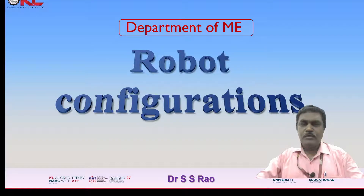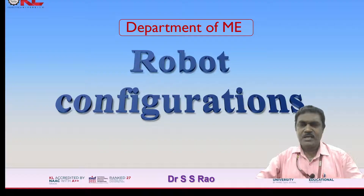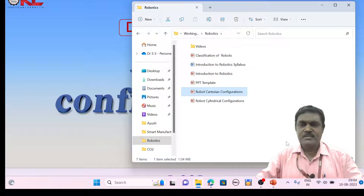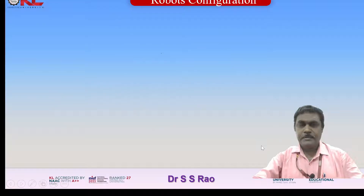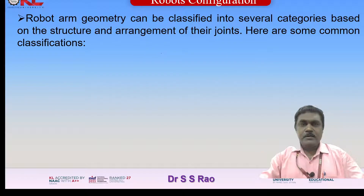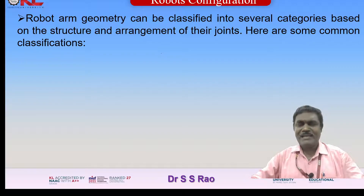In this video, I am going to explain robot configurations — what are the different configurations, and one configuration I want to explain in this video. First, what is the robot configuration? Robot arm geometry can be classified into several categories based on the structure and arrangement of their joints.